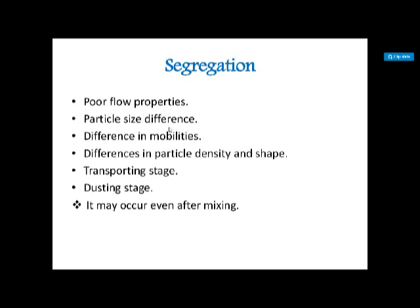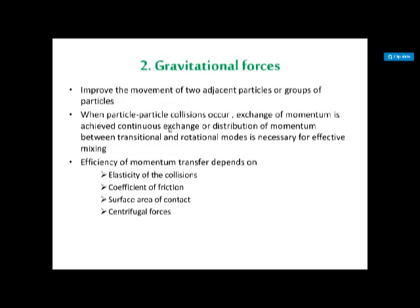Differences in particle density and shape also contribute to segregation — for example, if one particle is circular and another is square, maximum chance of segregation exists. Segregation can also occur during the transporting stage and during the dusting stage. Importantly, segregation can occur even after mixing, where one substance separates out from another even post-mixing.